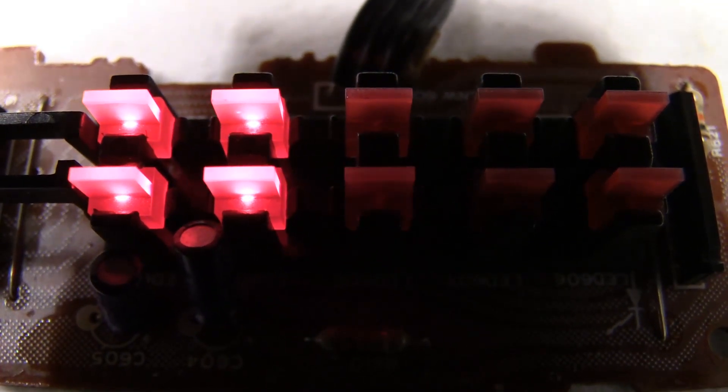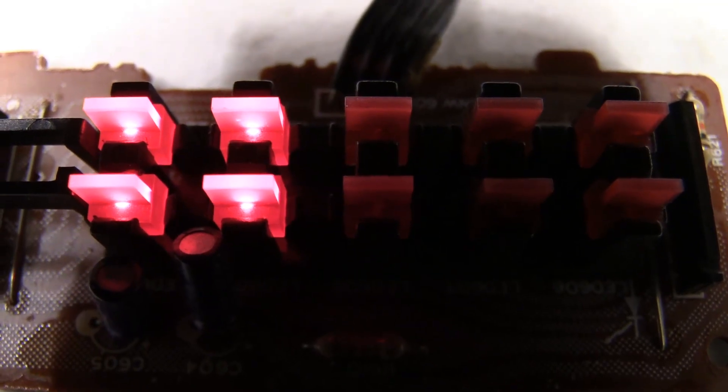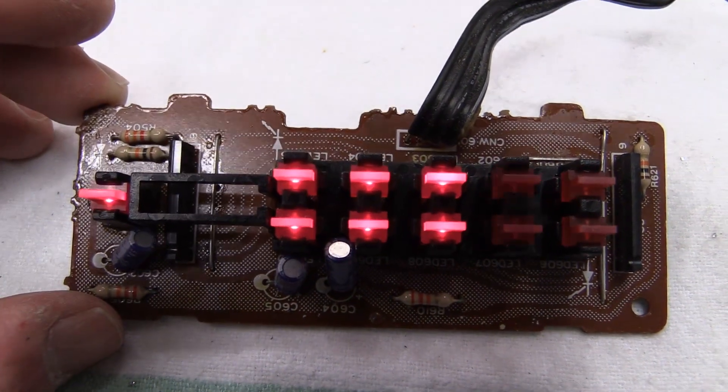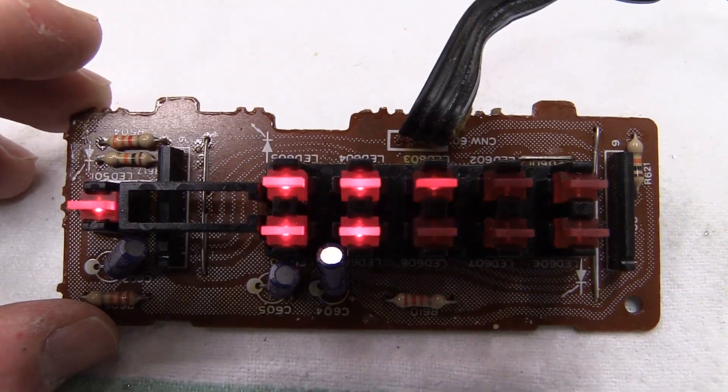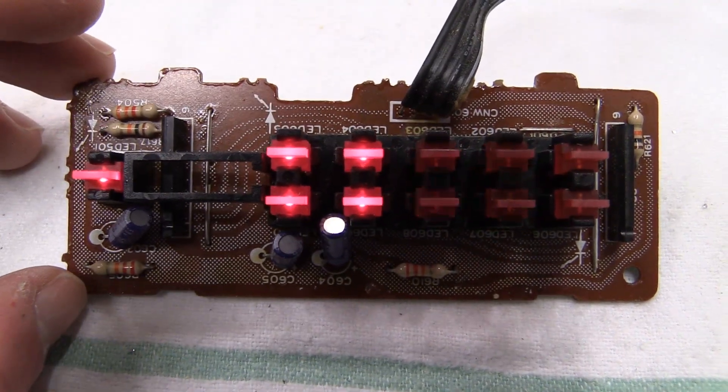What you're looking at, some of you are probably already able to tell, is in fact a VU meter. And what this is in its entirety is the display module out of a Sharp RT100 cassette deck that I once took apart.